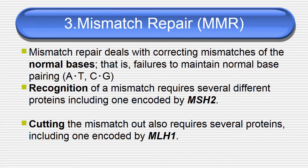The third type is mismatch repair. Mismatch repair deals with correcting mismatches of the normal bases, i.e., failure to maintain normal base pairing — A-T and G-C pairing. Recognition of the mismatch requires several different proteins including one encoded by the dominant gene MSH2. Cutting of the mismatch out also requires several proteins including one encoded by gene MLH1. MSH2 is involved in recognition and MLH1 is involved in providing proteins for cutting.